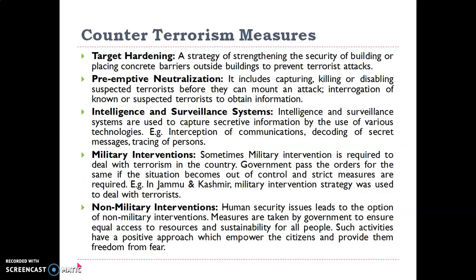Counter-terrorism measures include, firstly, target hardening — a defense mechanism given to a prospective target chosen by terrorists, involving strategies such as strengthening building security or placing concrete barriers outside buildings to prevent terrorist attacks. The second is preemptive neutralization, which includes capturing, killing, or disabling suspected terrorists before they commit the crime, based on information that they are planning mischievous activities, so they cannot mount an attack.